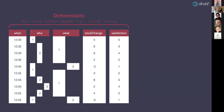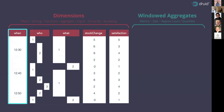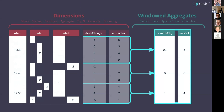I can end up with a set of dimensions, great for filtering, sorting, and doing functions. But I can also create windowed aggregations. In conversation with the business, maybe it's not so important that I have each individual row, but that I create blocks of time and then calculate, for example, the sum stock exchange or the maximum satisfaction figure for that period.